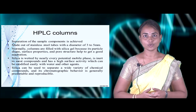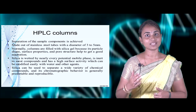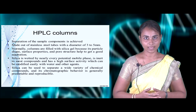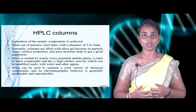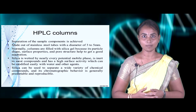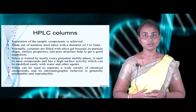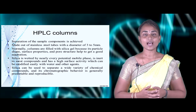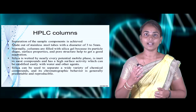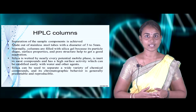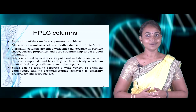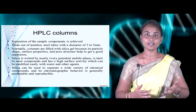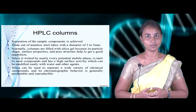Coming to the HPLC column: it is used for highly sensitive separation of different components based on their partition behavior. It is made up of stainless steel tubes with a diameter of 3 to 5 mm and is normally filled with silica gel, because silica gel's particle shape, surface properties, and pore structure help determine the quality of different analyses. As silica gel is used as a stationary phase, it is highly compatible with nearly every composition of solvents, and being highly inert with high surface activity, it can separate different components based on their polarity. Silica gel can separate a wide variety of chemical compounds, making the chromatography highly predictable and reproducible.